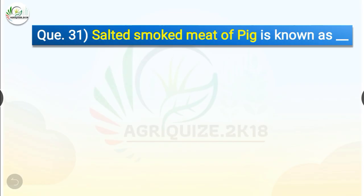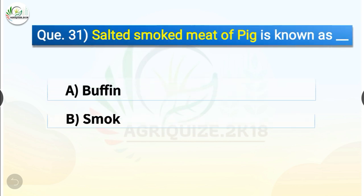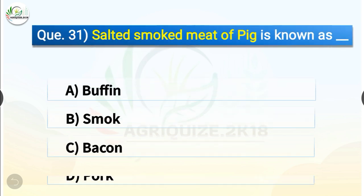Question number 31. Salted smoked meat of pig is known as dash. The options are buffon, smock, bacon or pork. The correct answer is option C, bacon. So salted smoked meat of pig is known as bacon.